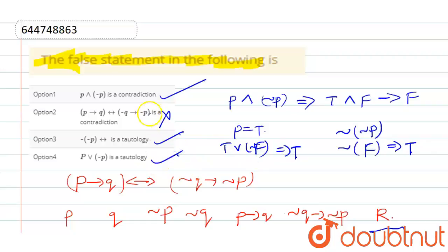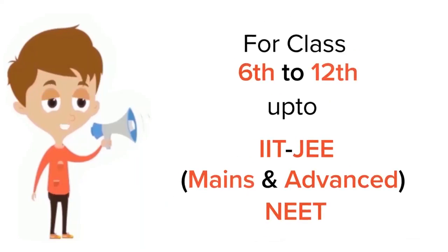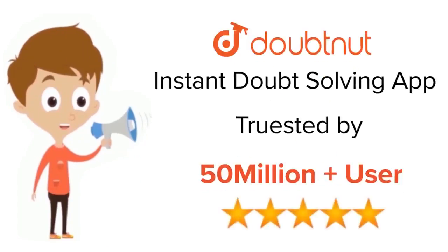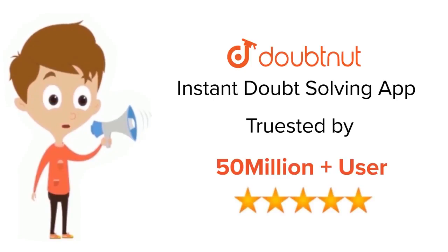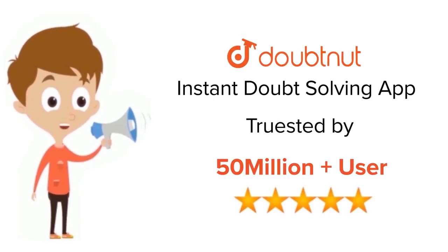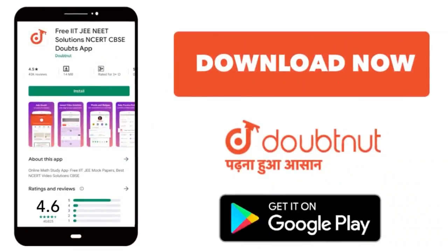So option 2 is the wrong option — that's it, thank you. For class 6 to 12, IIT JEE and NEET level, trusted by more than 5 crore students, download the DoubtNet app today.